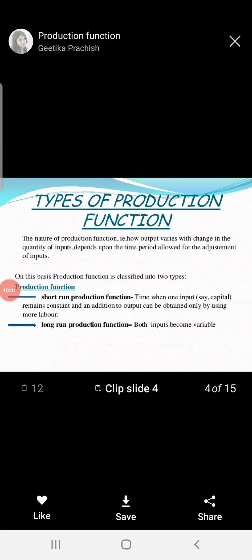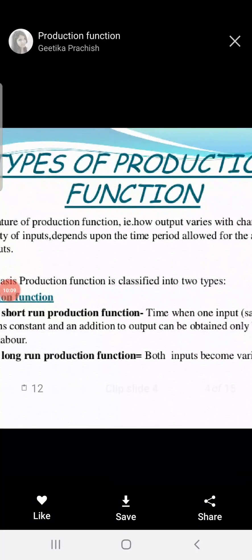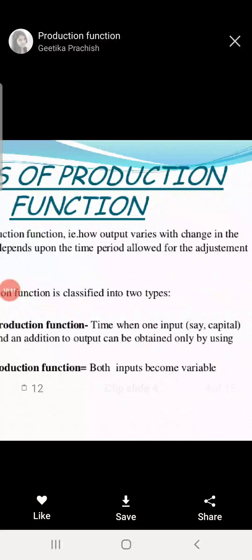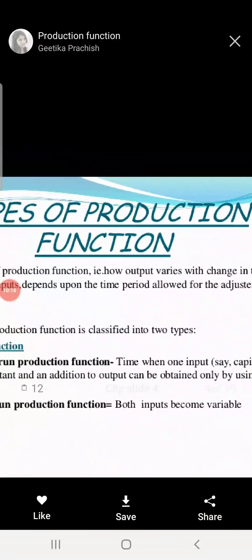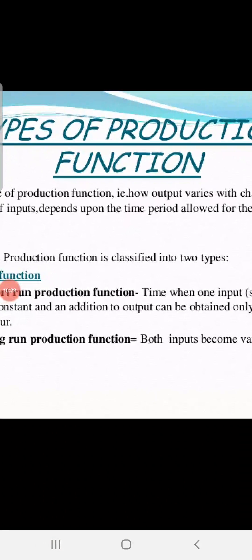Now the next concept is about the types of production function. The production function is related to time and shows how output arises with the help of input. Based on this, production is divided into two categories: the short run production function and the long run production function.